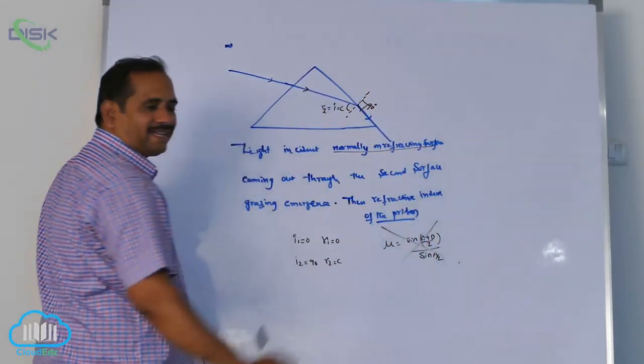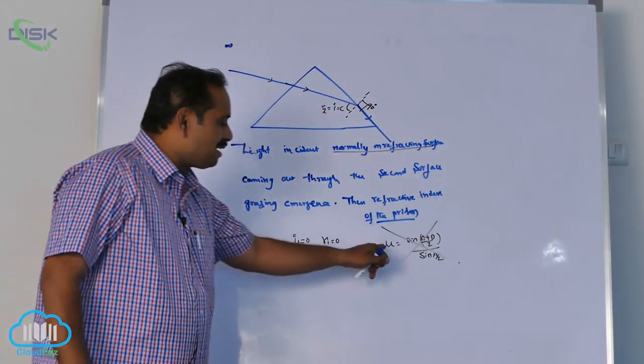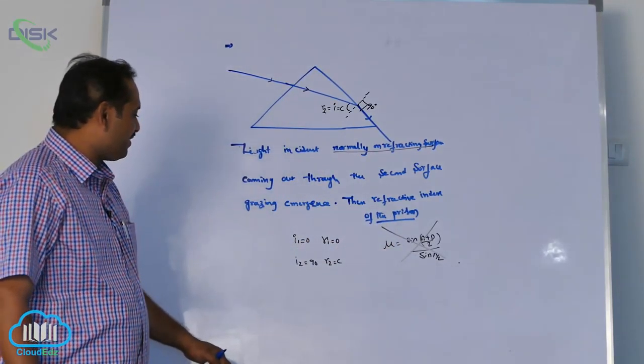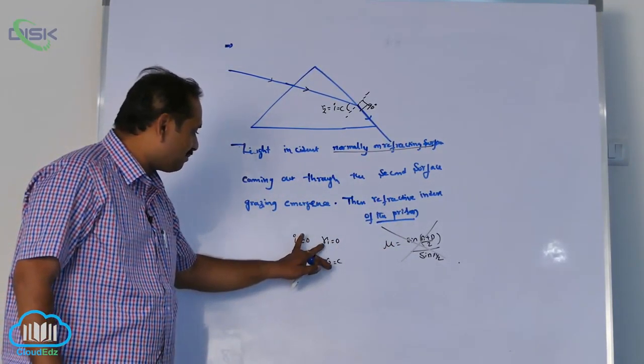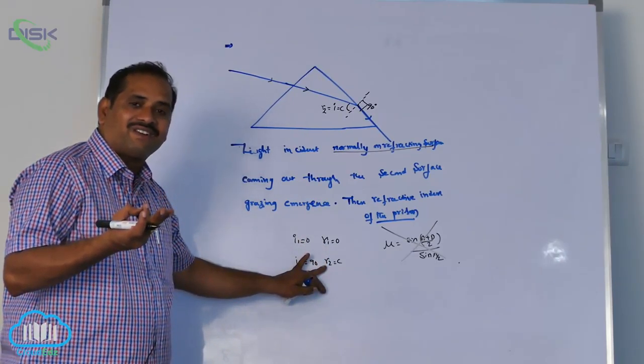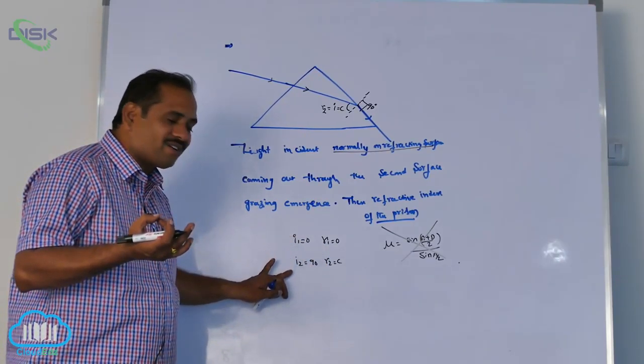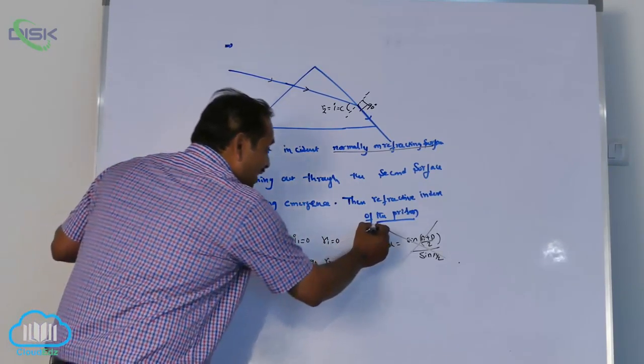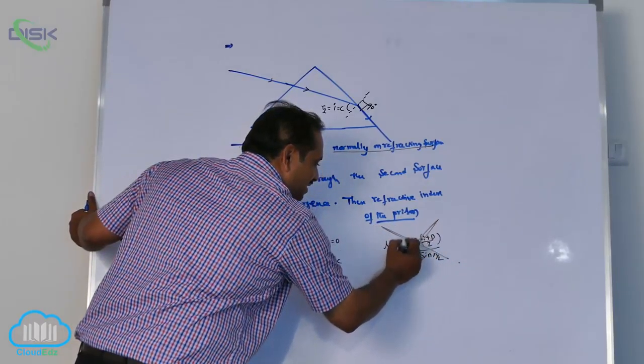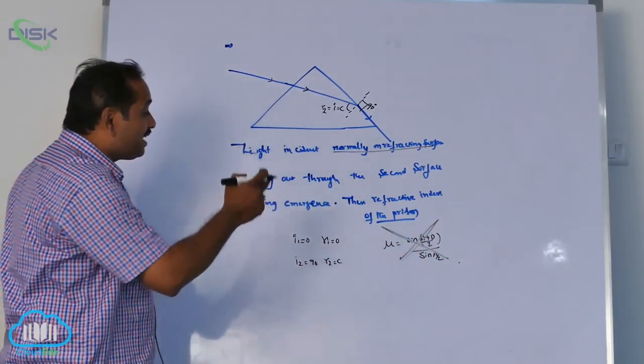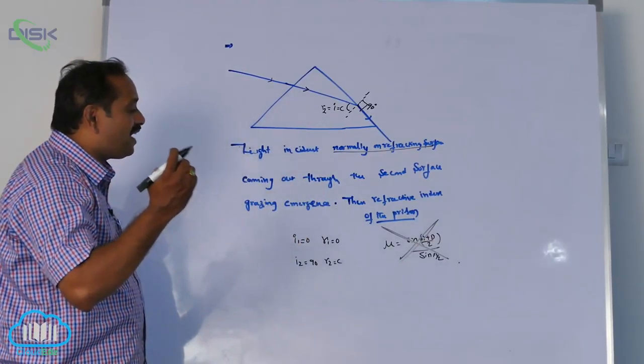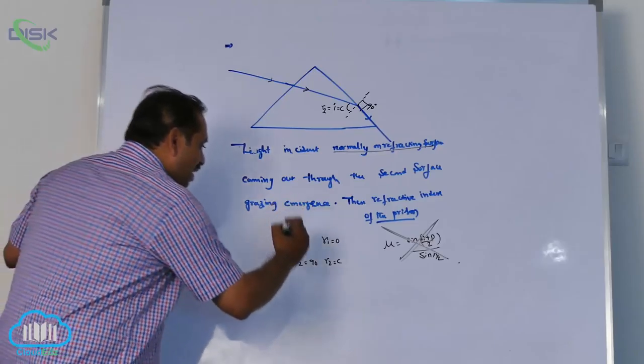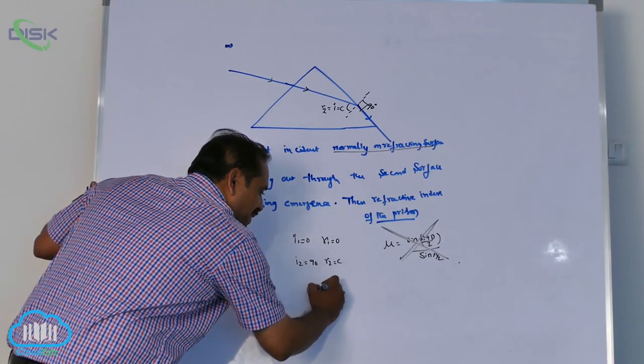You should not approach the problem like this. Why? It is applicable only at minimum deviation. Now your condition of minimum deviation - already I said with you - at minimum deviation what is the condition? r1 equal to r2, i1 equal to i2, it should be there. But it is not like that. Then my request please don't go for this. This is a wrong concept because it is applicable at minimum deviation.